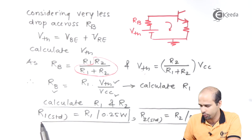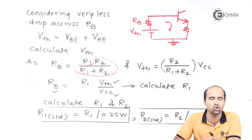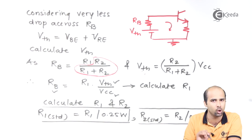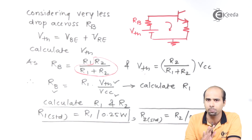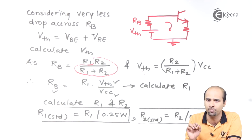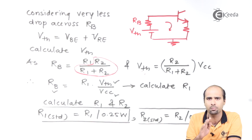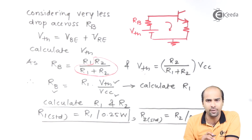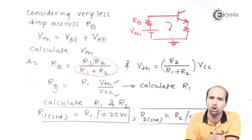Once we get the values of R1 and R2, we standardize all four resistances. RC is taken at the higher side, RE at the lower side, R1 at the higher side, and R2 at the lower side. For example, if the calculated value of RC is 3.5 kilo ohm, we take 3.6 or 3.9 kilo ohm as the standard value. If 3.5 is the emitter resistance, we take 3.3 kilo ohm as the lower side standard value.